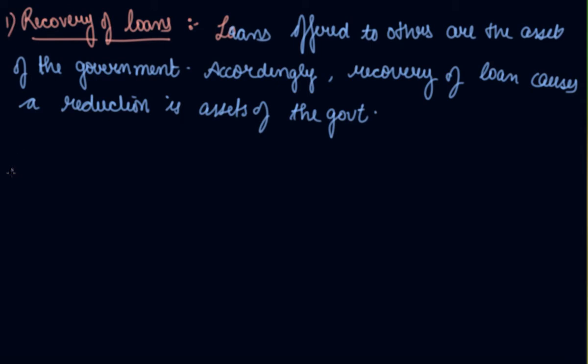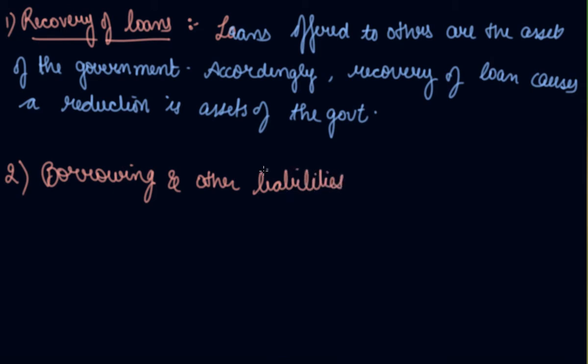The second type is borrowings and other liabilities. If the government is borrowing something, it means the government is increasing its liabilities. Suppose the government wants to take a loan — it reaches the RBI and takes a loan — but what happens is the liability of the government is raised. So while lending creates assets, borrowing creates liability. Accordingly, borrowings are treated as capital receipts.